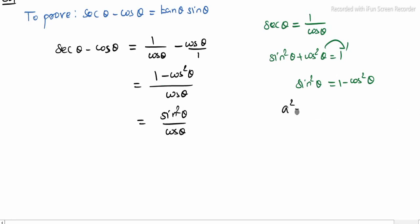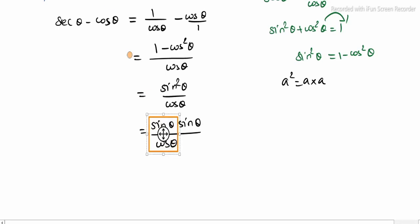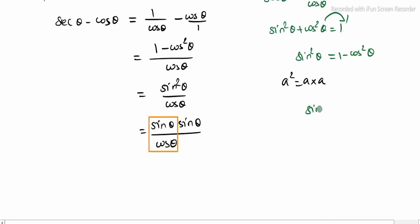A square is nothing but a into a. So sin square theta is equal to sin theta into sin theta, divided by cos theta. Now, sin theta by cos theta — this is the ratio of tan theta. Sin theta by cos theta is equal to tan theta. So this becomes tan theta into sin theta.